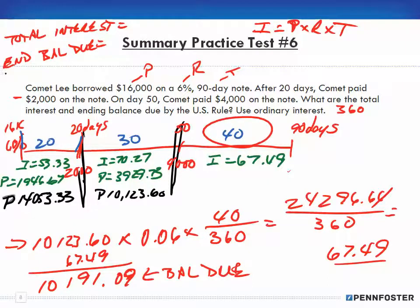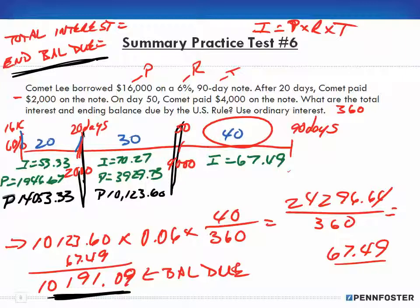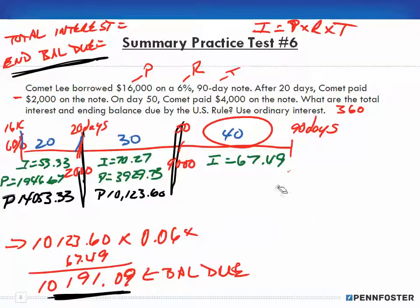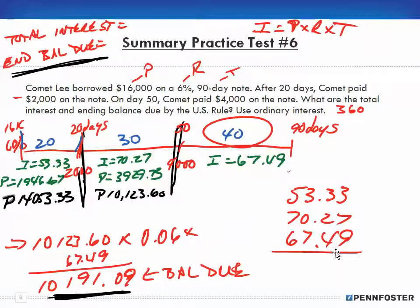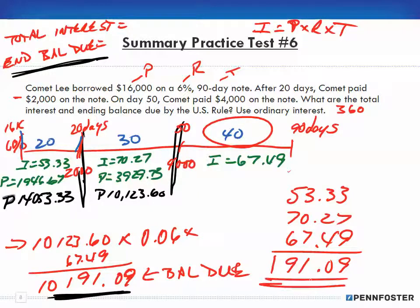That's our ending balance due — $10,191.09. Now to find the total interest, we add up the interest for all three periods: $53.33 (first 20 days) + $70.27 (next 30 days) + $67.49 (final 40 days) = $191.09. So our total interest over the life of the loan was $191.09.